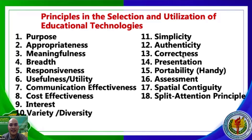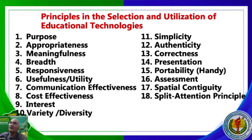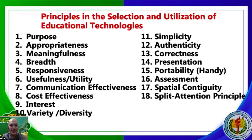Thirteen follows correctness — correct facts and correct information must be in the materials for a better learning process. Sometimes there are typographical errors you missed while teaching. Students might correct you: 'Sir, isn't that 1945?' So it should be correct and authentic. Fourteen is Presentation — the materials must be presented at the right time and in the right way. Fifteen is Portability — it should be handy, something you can carry and use easily. Sometimes teachers bring so many materials to class; as much as possible, it should be portable.